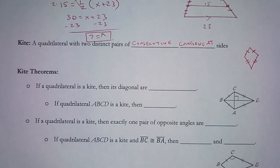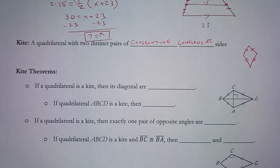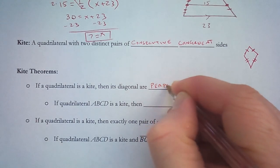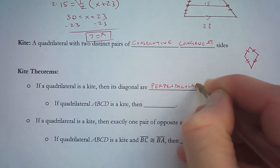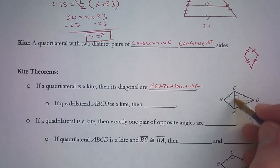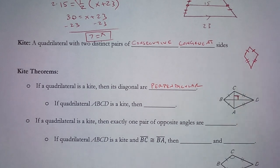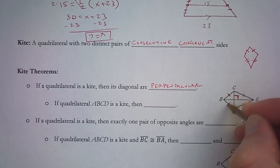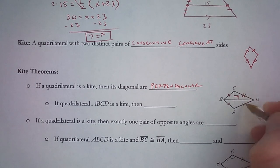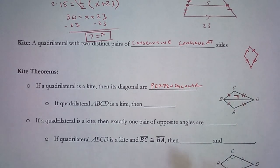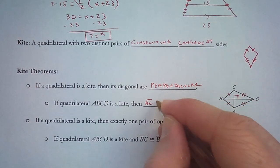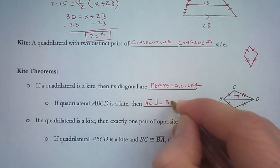Here are a couple of theorems about kites. If a quadrilateral is a kite, then its diagonals are perpendicular. So here the diagonals form a right angle — they are perpendicular to each other. If quadrilateral ABCD is a kite, with one pair of congruent sides and a different pair of congruent sides, then diagonal segment AC will be perpendicular to segment BD.